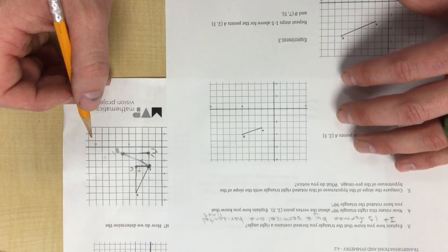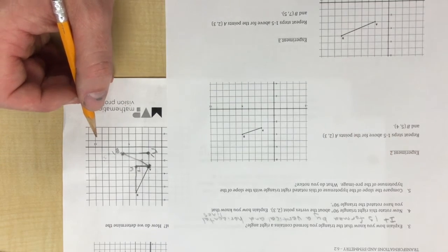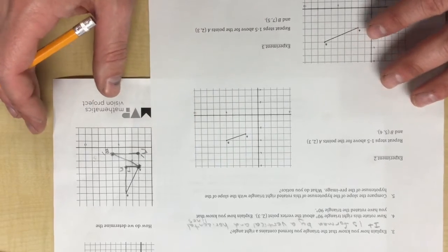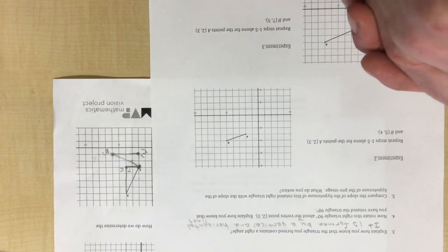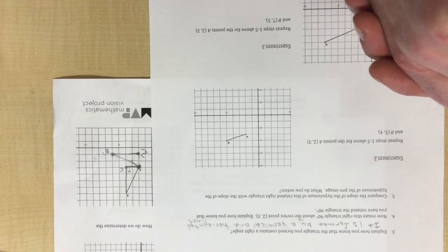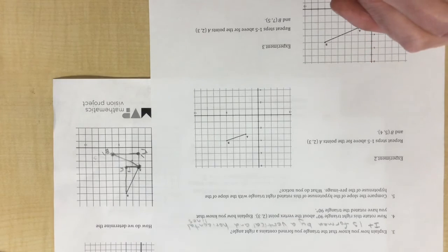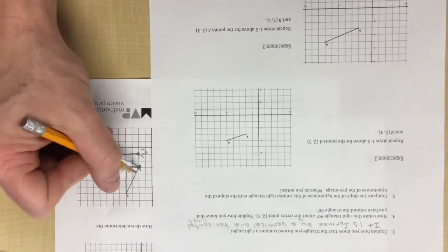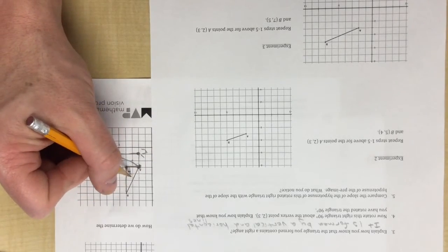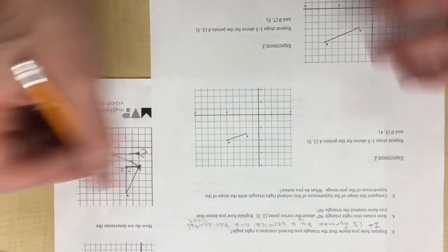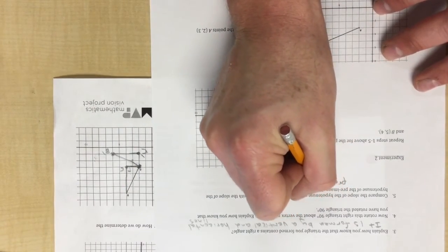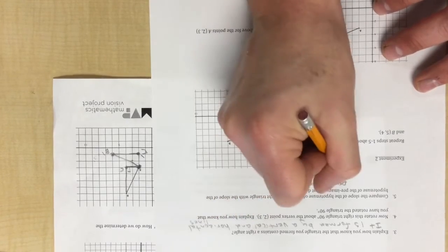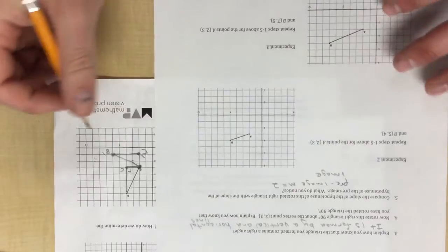So explain how you know you've rotated the triangle 90 degrees. Well, I'm going to go ahead and answer that in number five. It says compare the slopes of the hypotenuse of the rotated right triangle with the slope of the hypotenuse of the pre-image. What do you notice? The hypotenuse, remember, the longest side of the triangle, the slope of the pre-image, which is this one, was 2. So pre-image m is 2.